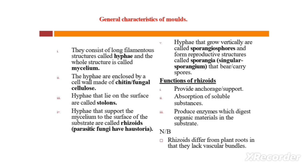What is the function of the rhizoids? Number one, they provide anchorage — that is, support. Number two, absorption of soluble substances. Number three, they produce enzymes which digest organic materials in the substrate. Note: rhizoids differ from plant roots in that they lack vascular bundles.